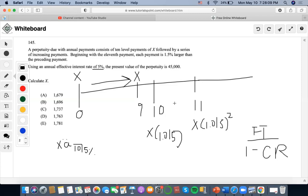We see here that we could discount this back V to the 10, and we also discount this back V to the 11. So the first term would consist of 1.015 V to the 10 over 1 minus the common ratio of 1.015 V.